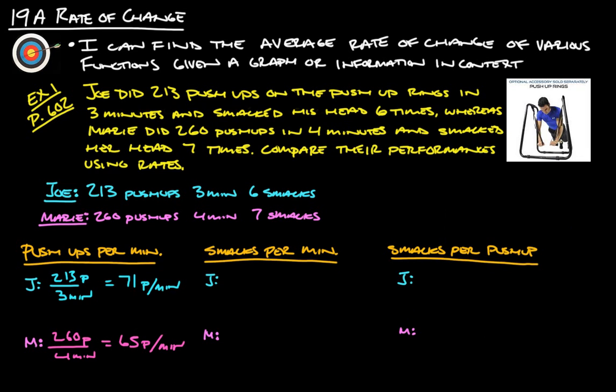Now let's compare smacks per minute. Joe had six smacks in three minutes for an average rate of two smacks per minute. So he whacked his head twice every minute.